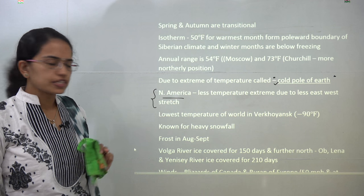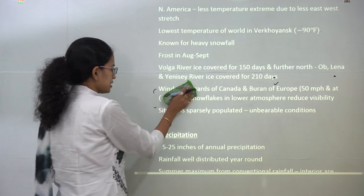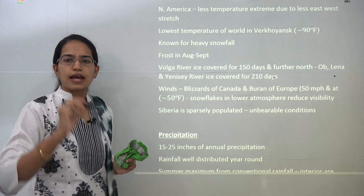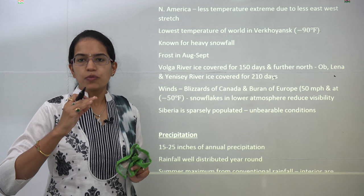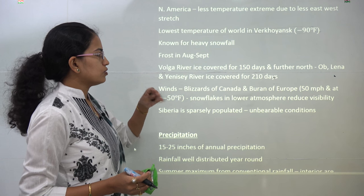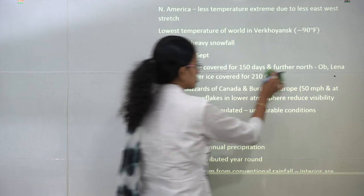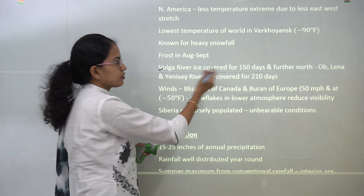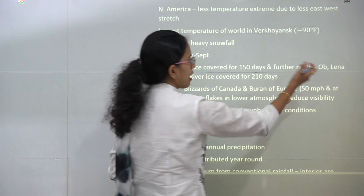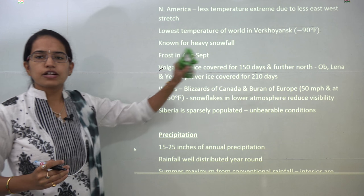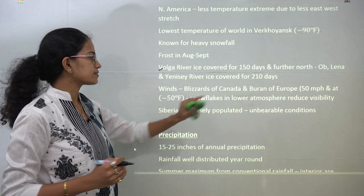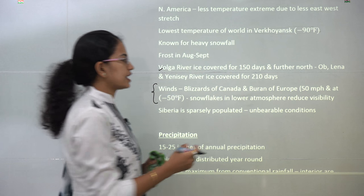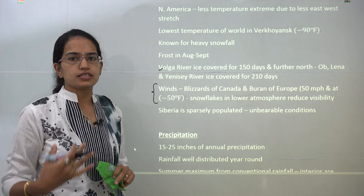The region is known for heavy snowfall. You have frost in the months of August and September. Most of the rivers of this region are primarily snow-covered for more than 150 days, and only for a few days does the snow melt into water. The Volga River is ice-covered for 150 days; moving further north, the Ob and Yenisei rivers are ice-covered for nearly 210 days. Very strong winds blow in this region — known as blizzards in Canada and Buran in Europe — reaching speeds of up to 50 miles per hour.